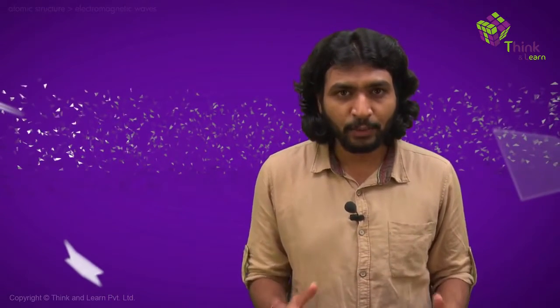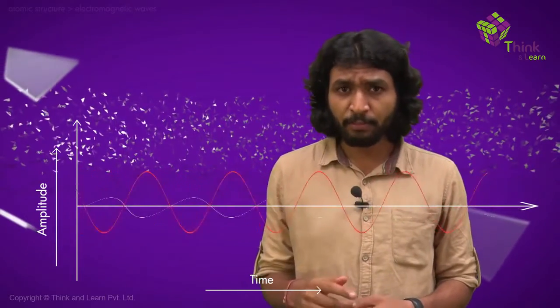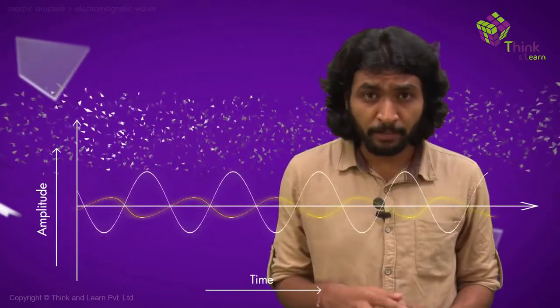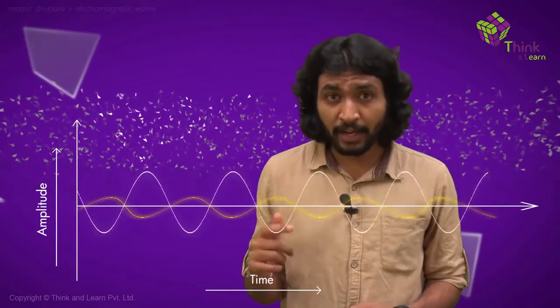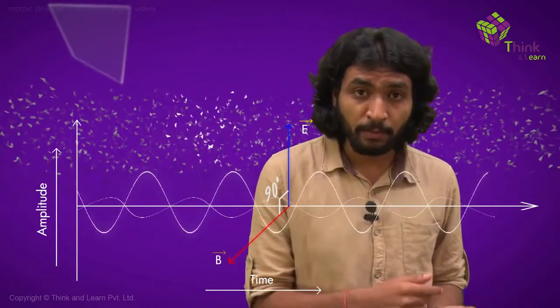In an electromagnetic wave, we have an electrical field oscillating perpendicular to the magnetic field, and both the electrical and magnetic fields are mutually perpendicular to the direction of propagation of the wave.